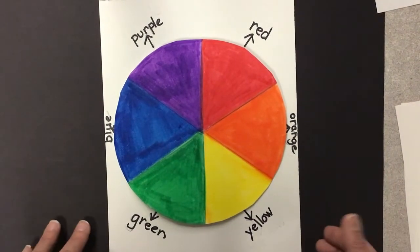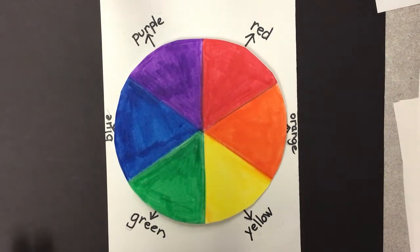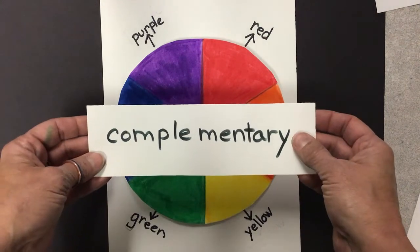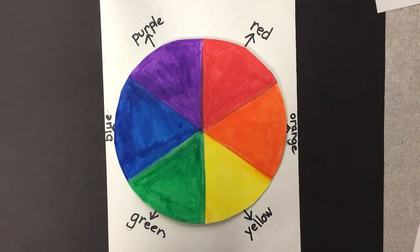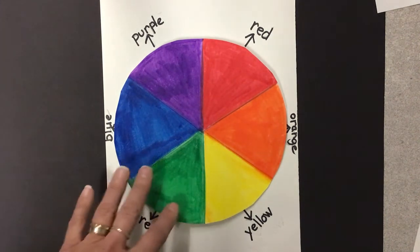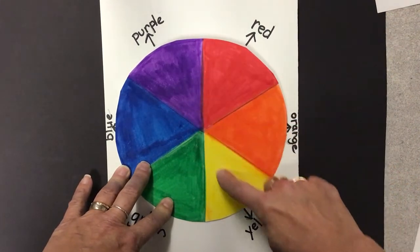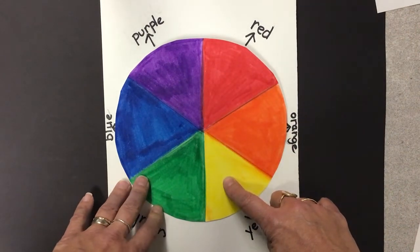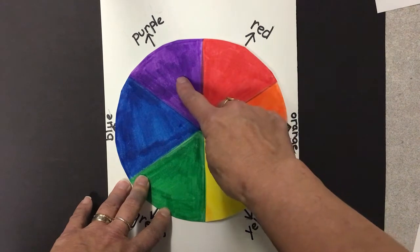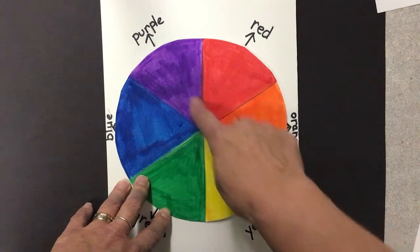But another thing that we can learn about the color wheel is colors that are opposite each other on the color wheel. And these colors are called complementary colors. They make each other stand out, and the reason why they make each other stand out is because they're completely opposite of each other. So for instance, purple and yellow are complementary colors. They're opposite on the color wheel, and they have nothing in common, because purple is made from blue and red, and yellow is a primary color. They are complete opposites.